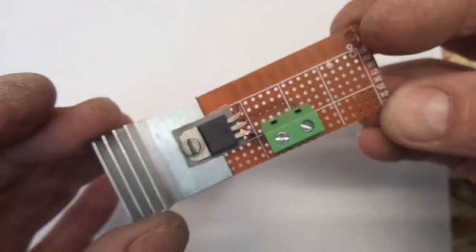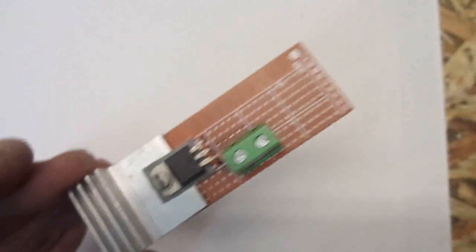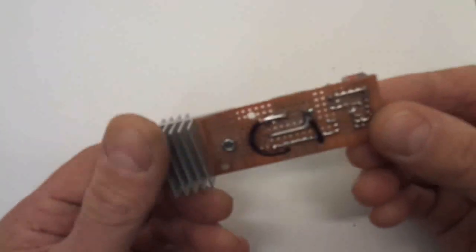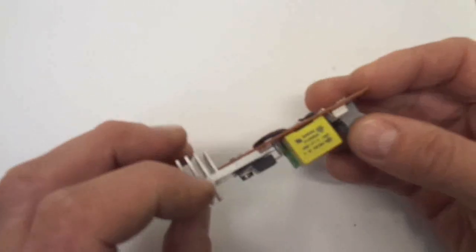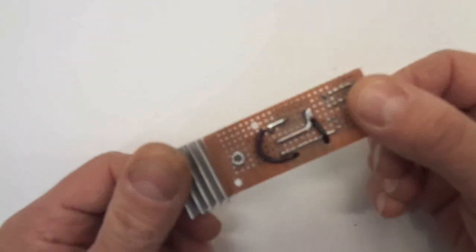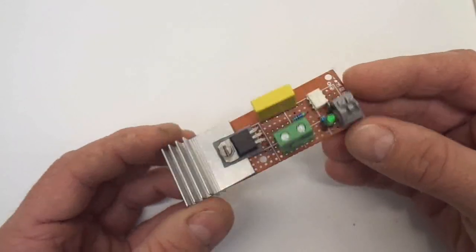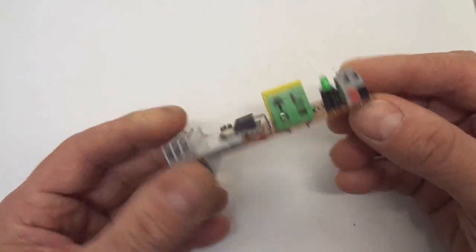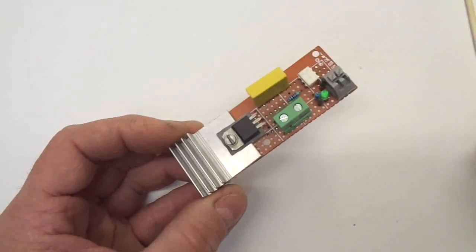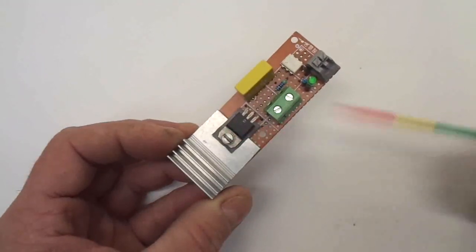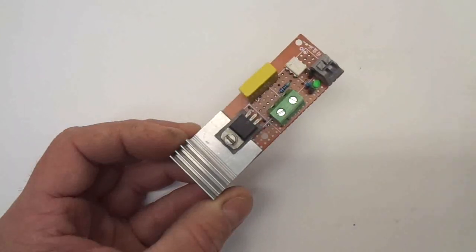And now it's time for the opto coupler. Unfortunately I lost a few steps of the building process, but here it is - the finished product. My solid state relay capable of maximum 25 amps on 240 volts.